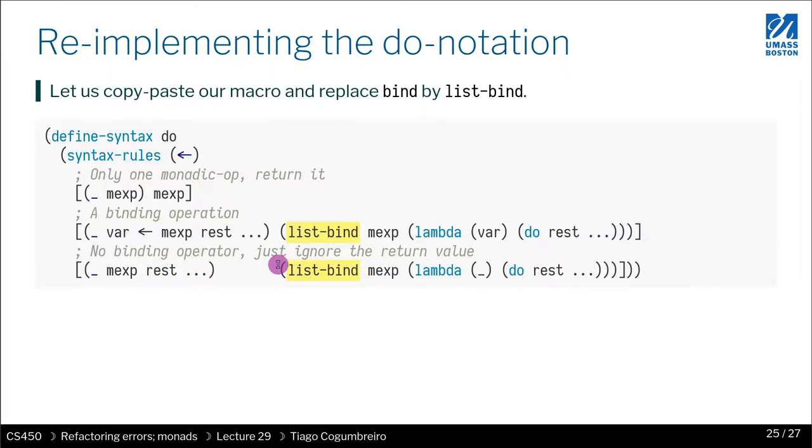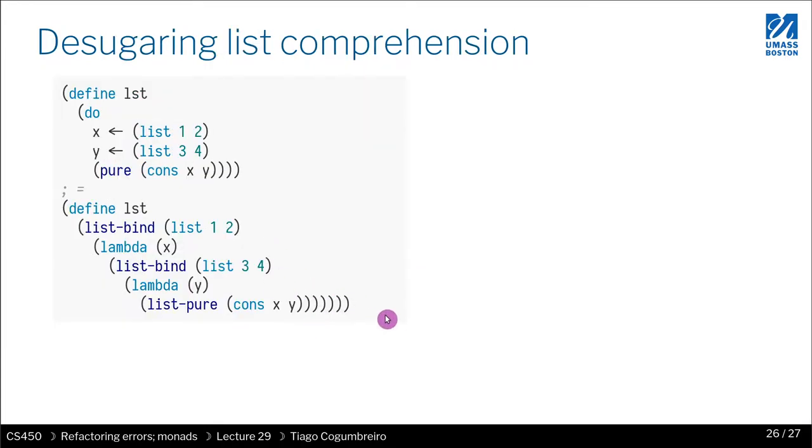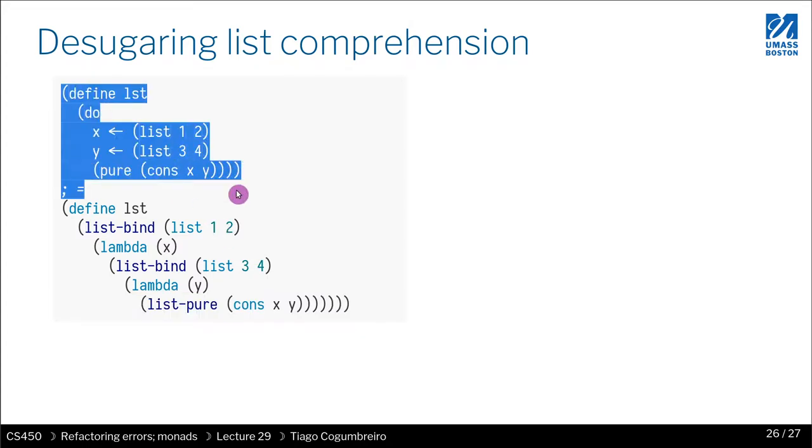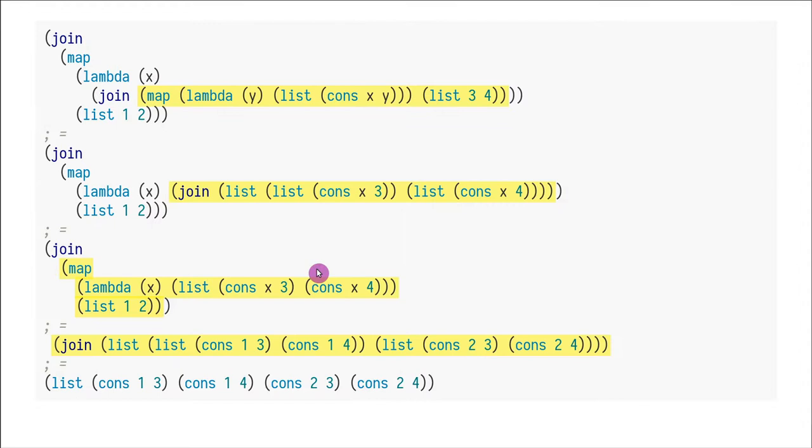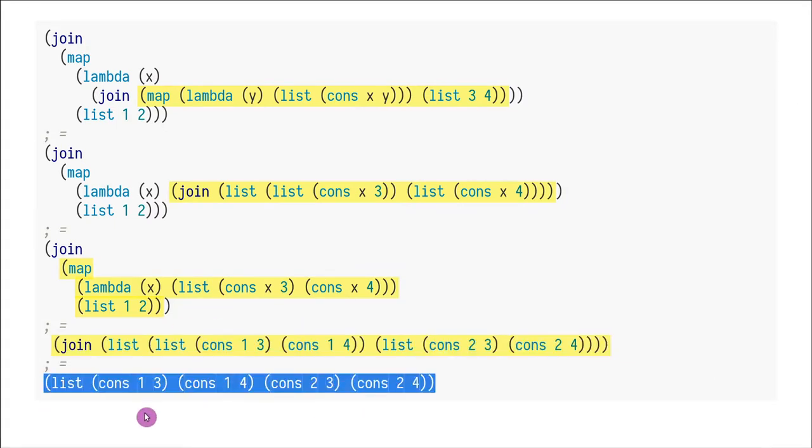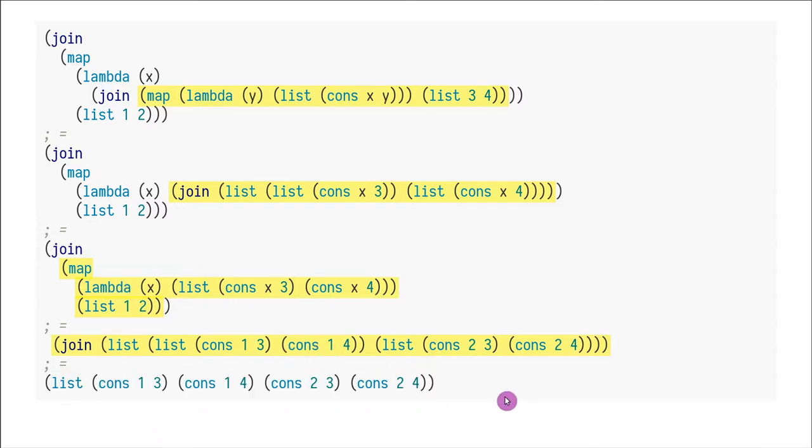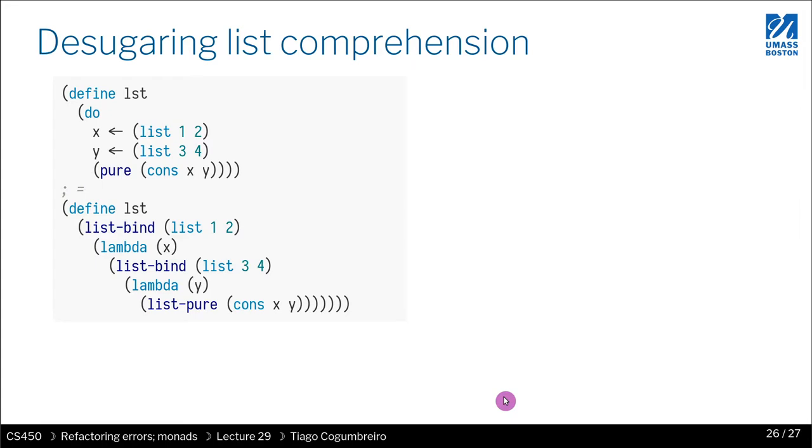And if you convert your macro and replace it to list bind, then writing this code would be the same as writing this whole thing, which would generate the right code. And you would get what you would expect. And this I'll just ask you to try to do it at home. Copy paste it to your own favorite Racket IDE and try to run the examples to see that this indeed works as expected.